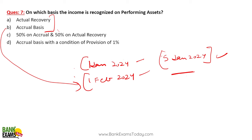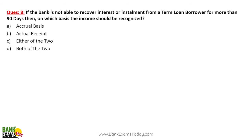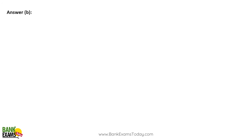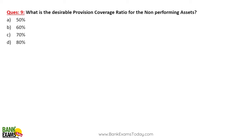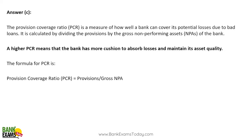On performing assets, income is recognized on accrual basis. On NPAs and loss assets, it is recognized on actual recovery basis — when the bank actually receives the money. The desirable provision coverage ratio is 70% of gross NPA. Provision coverage ratio equals provisions divided by gross NPA.